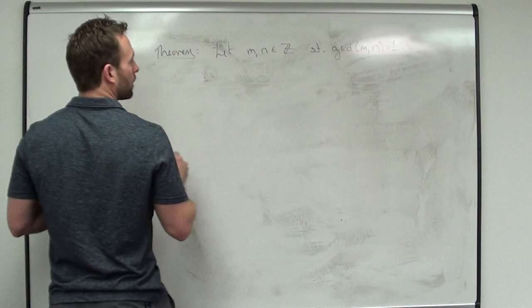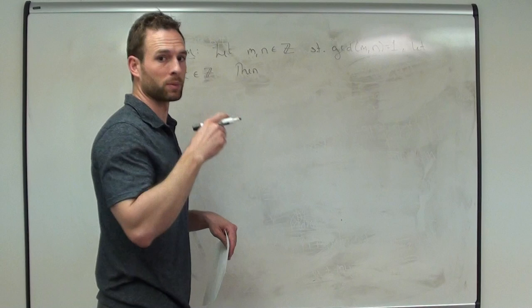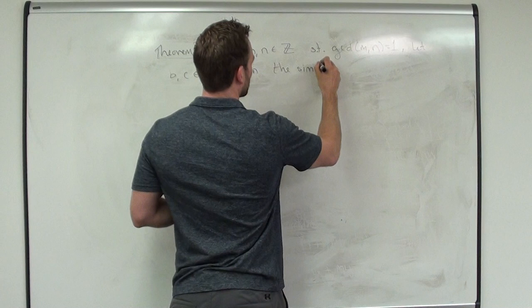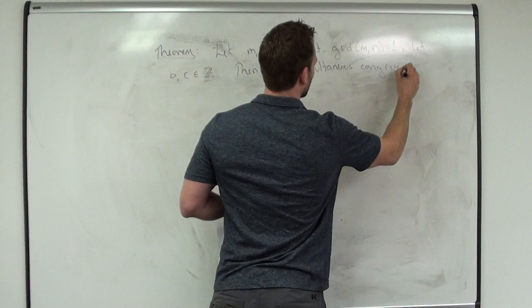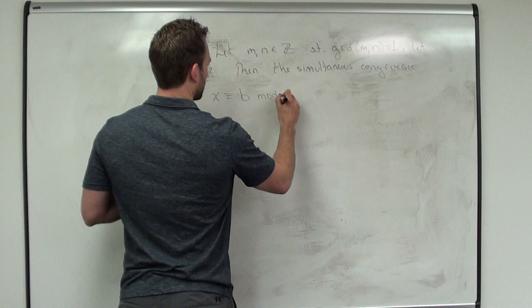And let B and C be a pair of integers also — not saying that those guys are co-prime. Then, this is really all it is: a two-by-two system of equations, and you'll see how we do the problem set. Then the simultaneous congruence: x congruent to B mod M, and x congruent to C mod N.